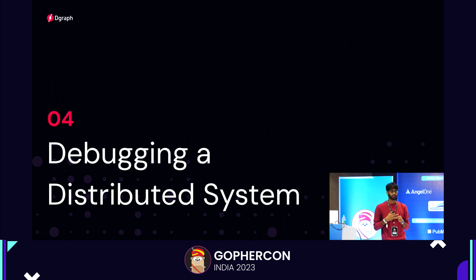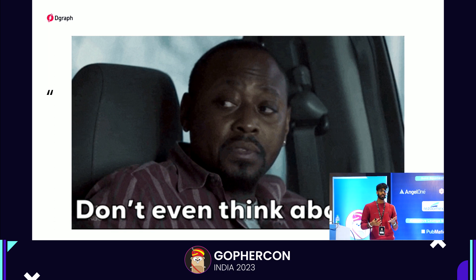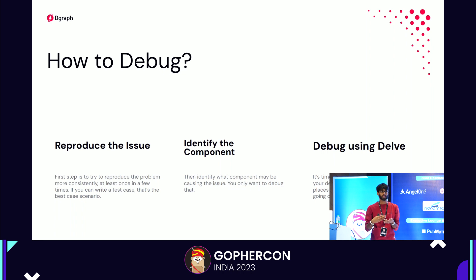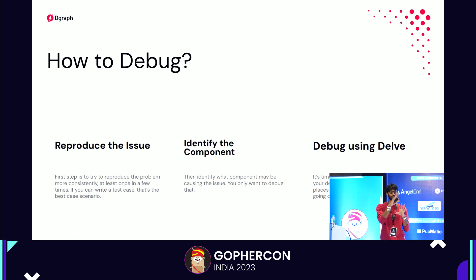Now let's talk about the main topic: debugging a distributed system. Building a distributed system is really hard, and debugging it is even harder. The first step is to reproduce the issue. If you see a bug in production or during testing, you need to be able to reproduce it consistently — even if it reproduces only 10 out of 100 runs. Writing a test is ideal. If you cannot reproduce the issue, it effectively doesn't exist and you can't debug it. Once reproduced, make an educated guess about which component is causing the issue, then debug that component using Delve.